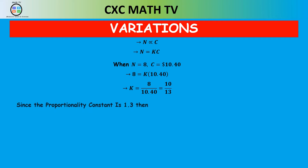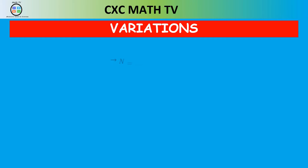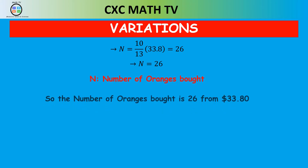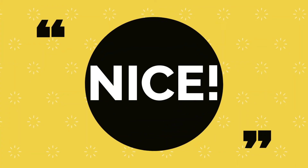Once we get the variation constant, we substitute it back into the original equation: n equals 10 over 13 times c. When c is 33.80, we need to find n. Plugging c as 33.8, we get n equals 26 — the same answer as before. So the number of oranges bought is 26. It is that simple.